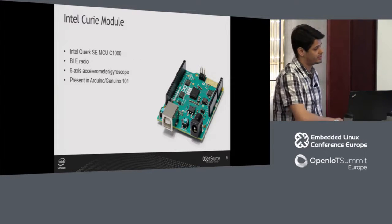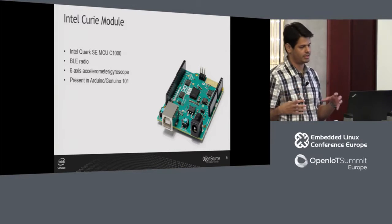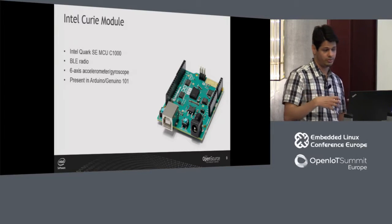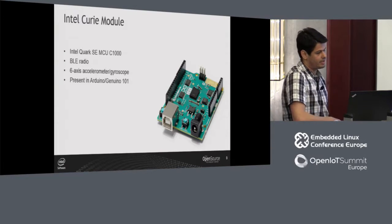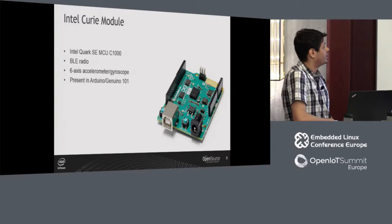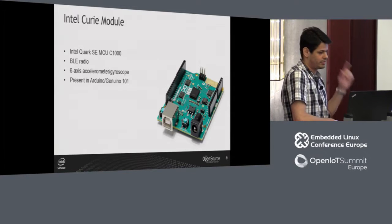You can find the Quark SE SOC on the Intel Curie module. The Intel Curie module is a Quark SE with a Bluetooth radio. It also has a six-axis accelerometer and gyro. You can find it on the Arduino 101 board, which is being displayed on the booth upstairs.